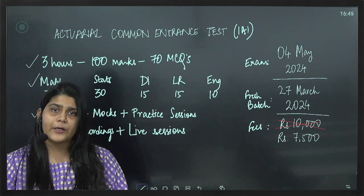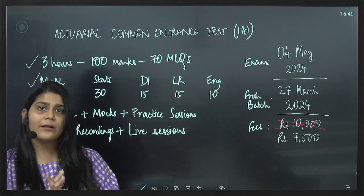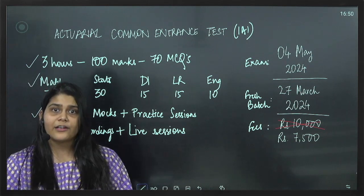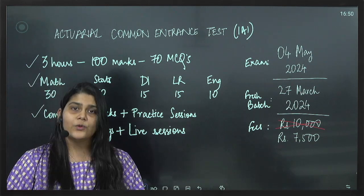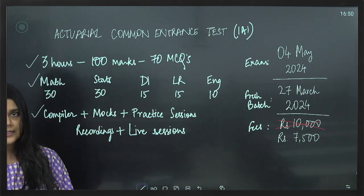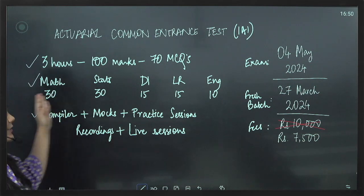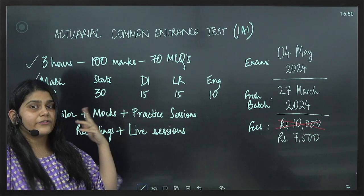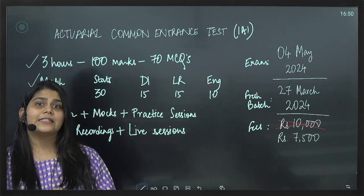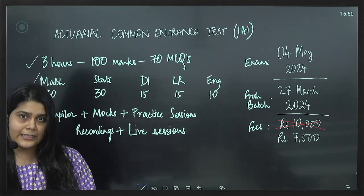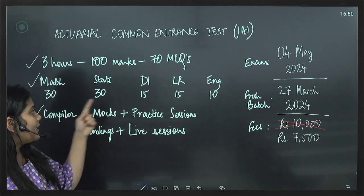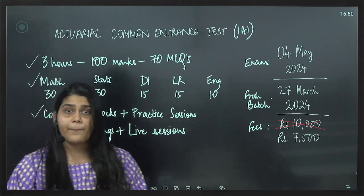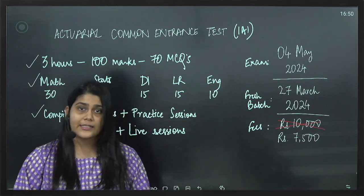So people who will be appearing for this examination will have already cleared their 10 plus 2. It does not matter if your results are still awaited. You can always register for the exam. There are 5 sections in the examination. There is Mathematics, Statistics which is of course very important since this entire domain is based on that. Then we have Data Interpretation, Logical Reasoning and English again a big part of the entire Actuarial Science course.